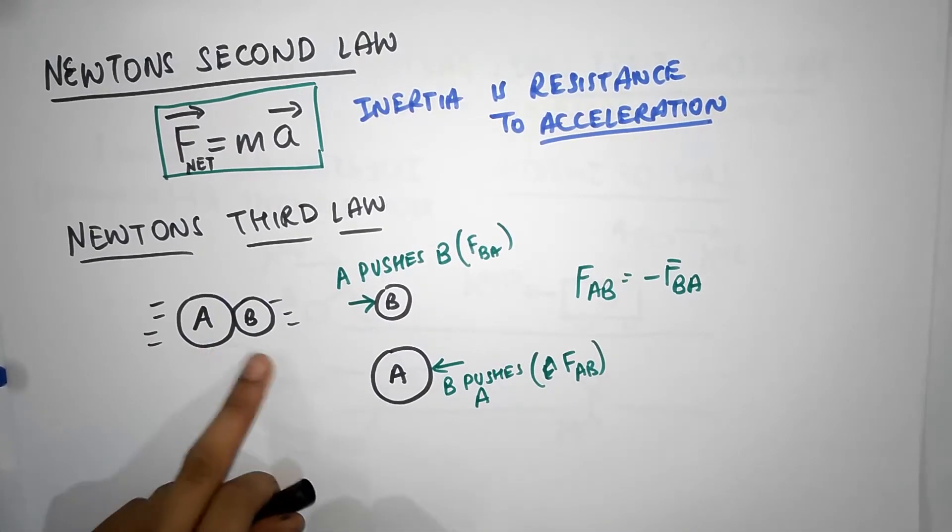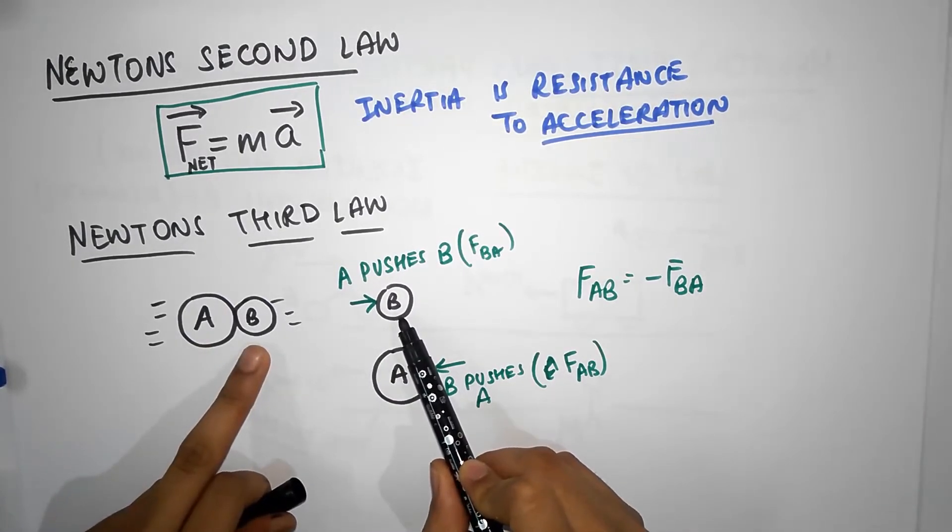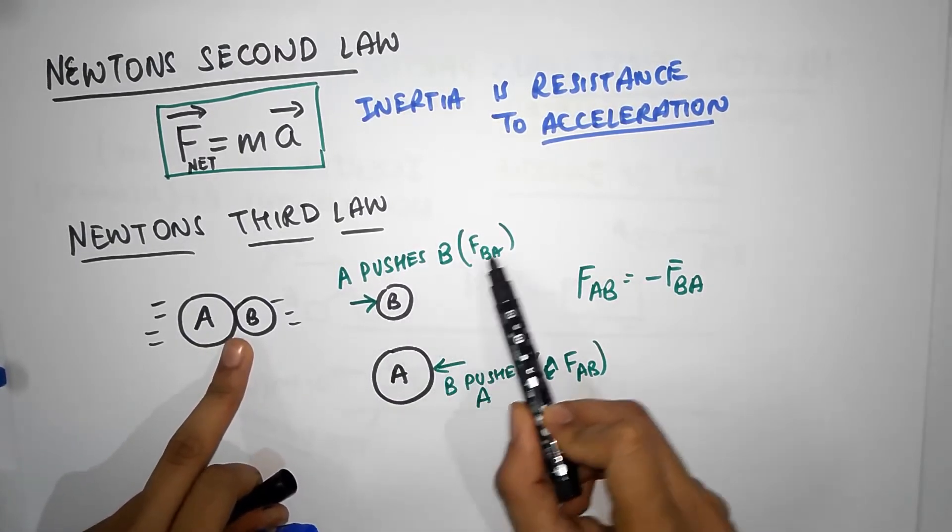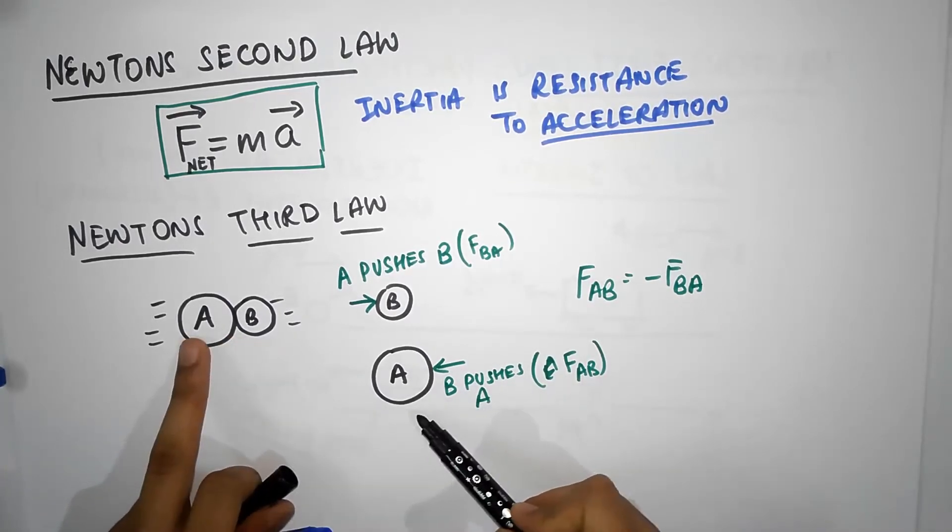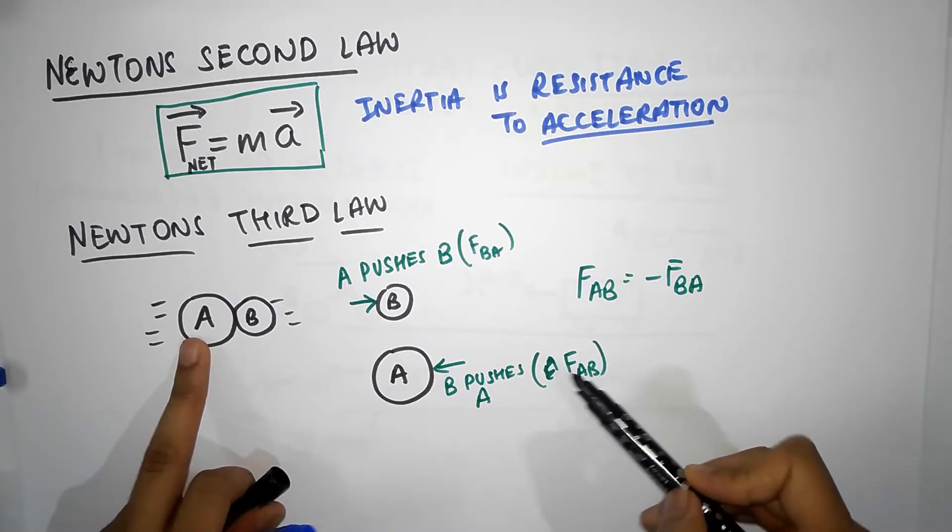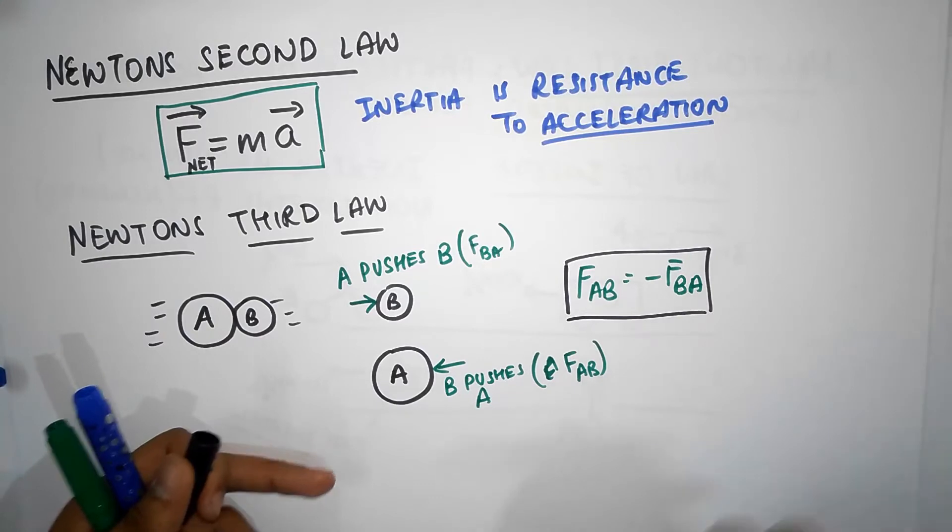These guys are going to put forces on each other. So A is going to push B towards the right and let's call that force F_BA, and B is going to push A towards the left and let's call it F_AB. Then the third law says F_AB must be equal to minus F_BA.